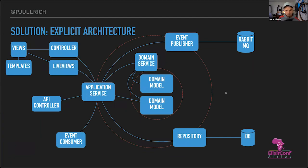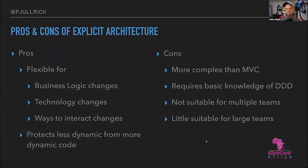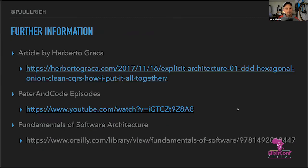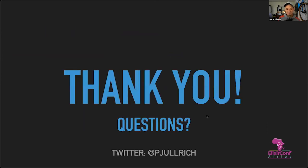Some pros and cons of the explicit architecture: it's flexible for changes — you can change anything in the boundaries without changing much in the middle. It protects less-dynamic code from more-dynamic code. Cons: it's more complex than MVC, requires basic knowledge of domain-driven design, and is not ideal for large or multiple teams since you still step on each other's toes. For more information, see the article by Herberto Graca, my episodes on Peter and Code YouTube channel, and the book 'Fundamentals of Software Architecture.' Thank you, and I'm happy to take questions.